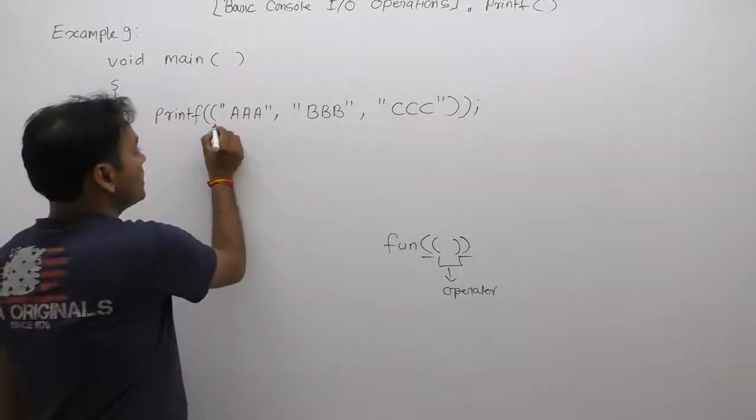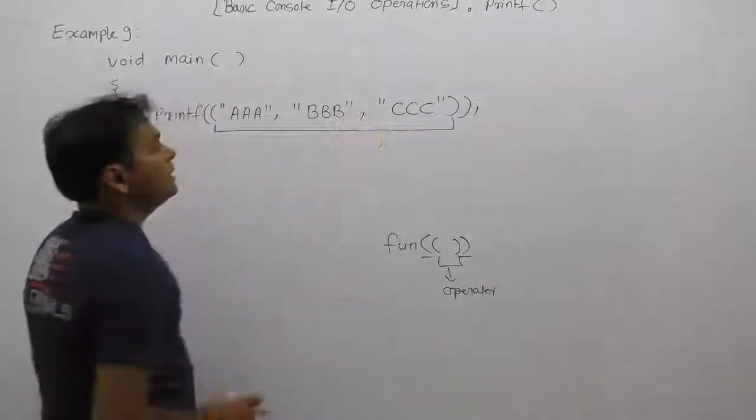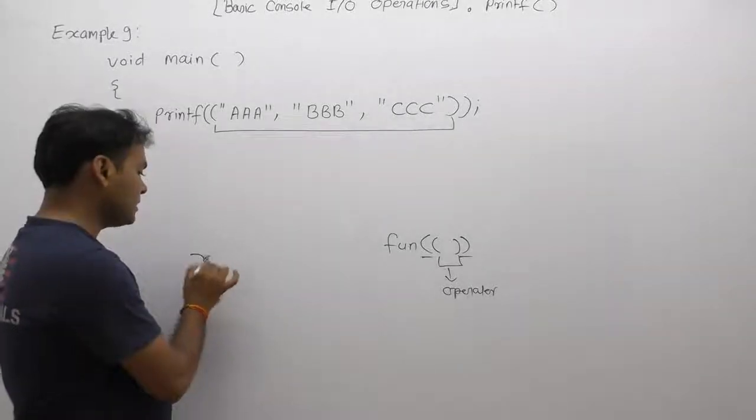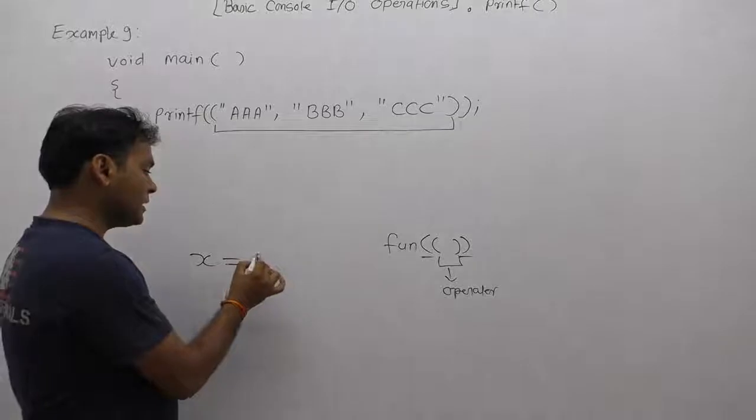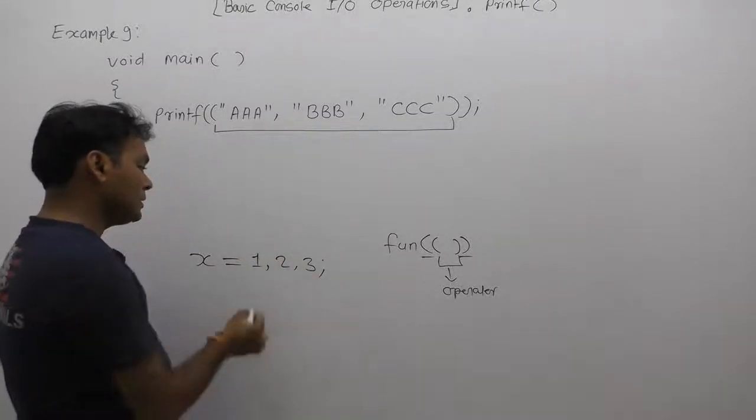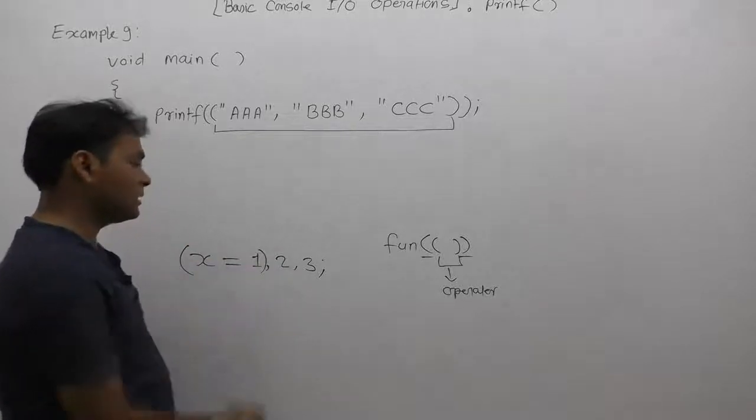First of all, concentrating only on that case. As we discussed in comma operator, I just explained that if you have any expression like x equals one, two, three. In this case, assignment is at the highest priority, therefore it becomes like that, so x is initialized by one.